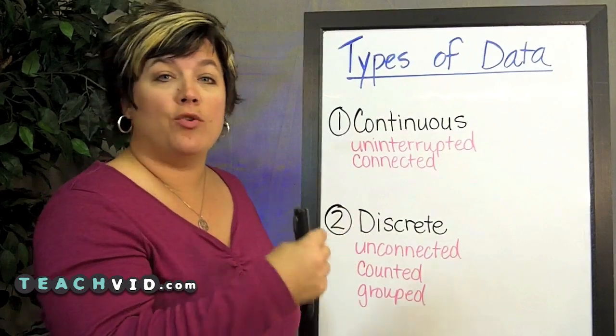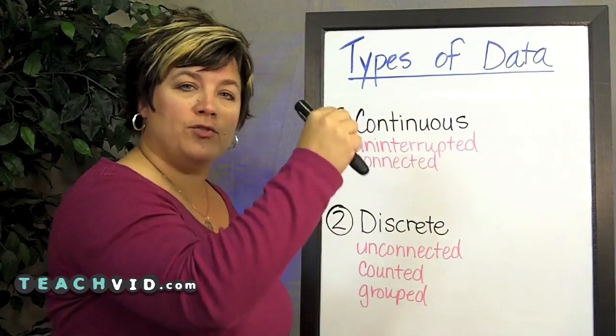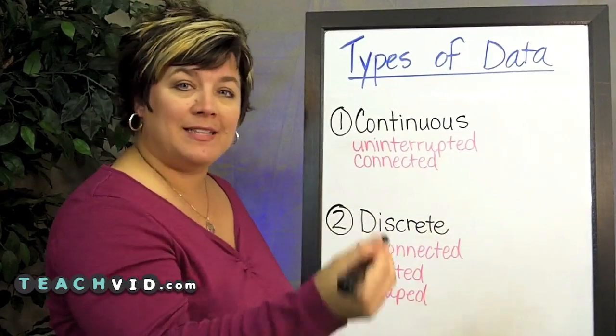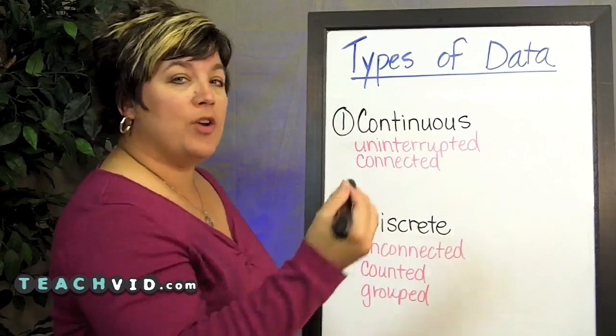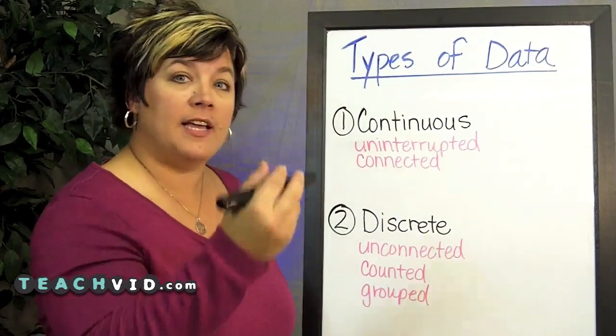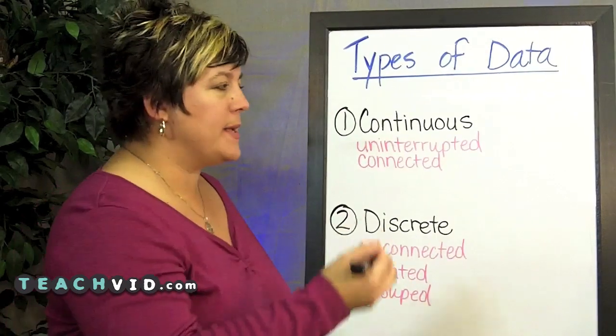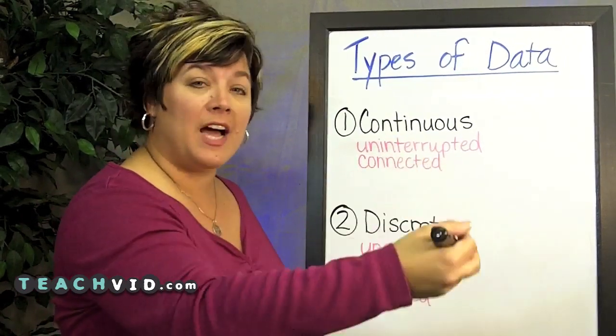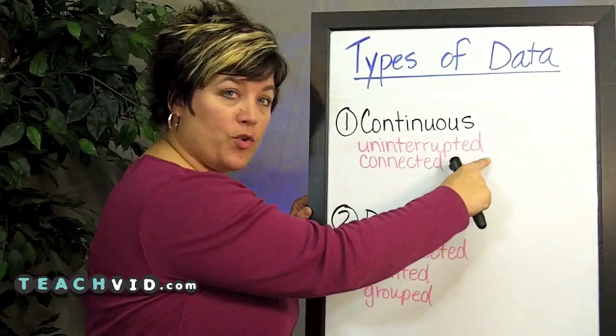So every week, say on Monday, you go ahead and get your measuring tape and you measure the height of the plant and you record that data. Well, you could have done it every day instead of once a week and you still would have been able to get data because the plant kept growing the entire time. So it was uninterrupted.